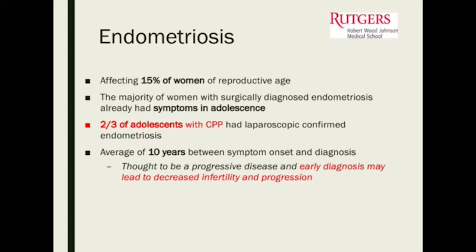Endometriosis affects about 15% of women of reproductive age. Endometriosis is basically when endometrial tissue is not just localized inside the uterus where it's supposed to be, but is in other parts of the pelvis. Every month when a woman has her period, the hormonal changes make all the tissue outside the uterus react, and patients come in with cyclic pelvic pain.